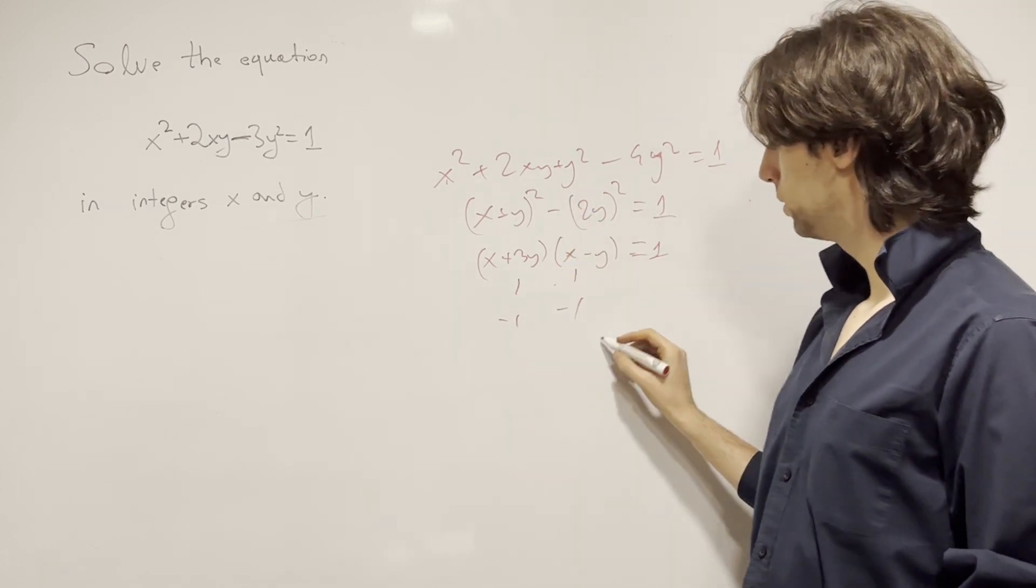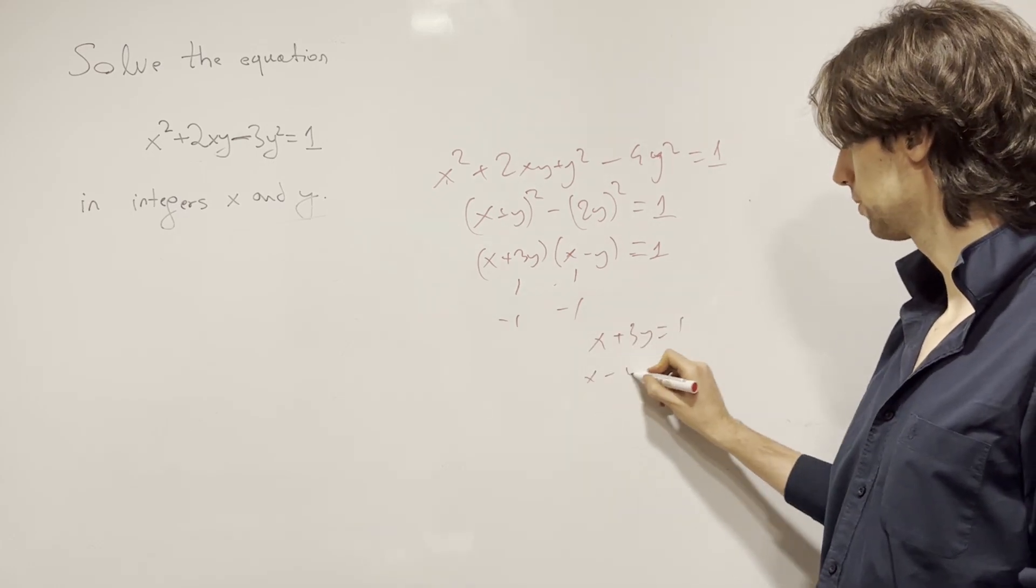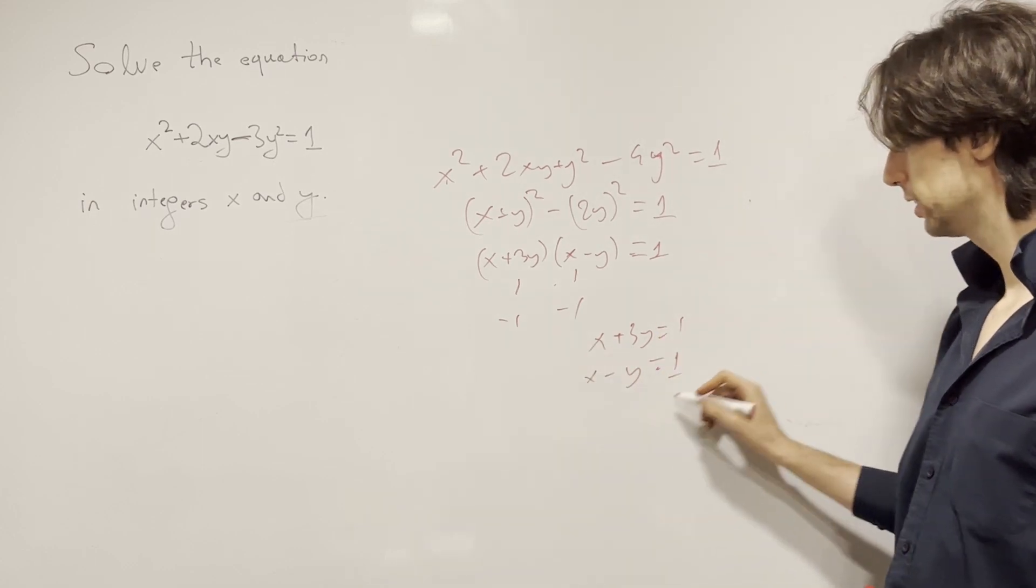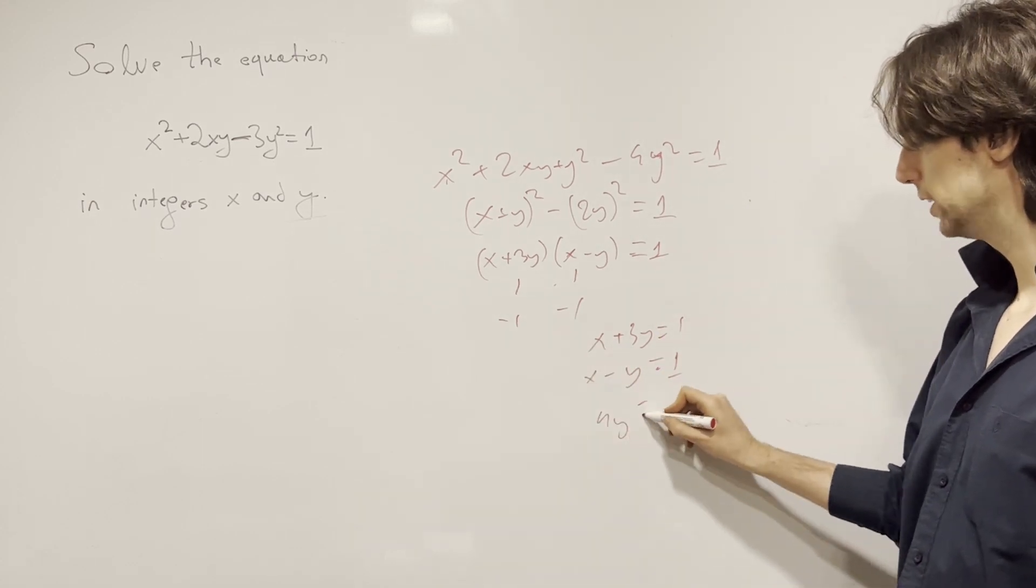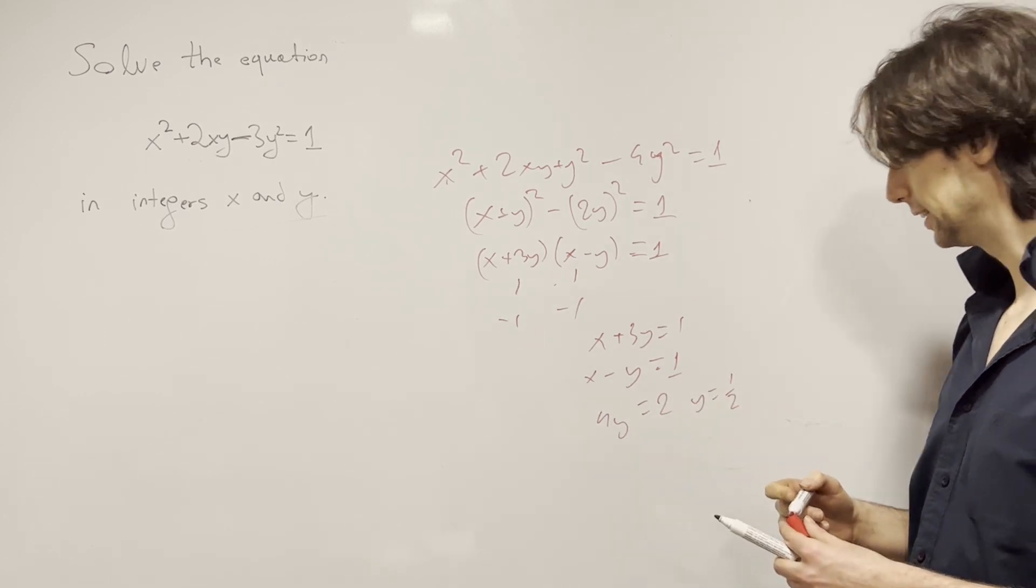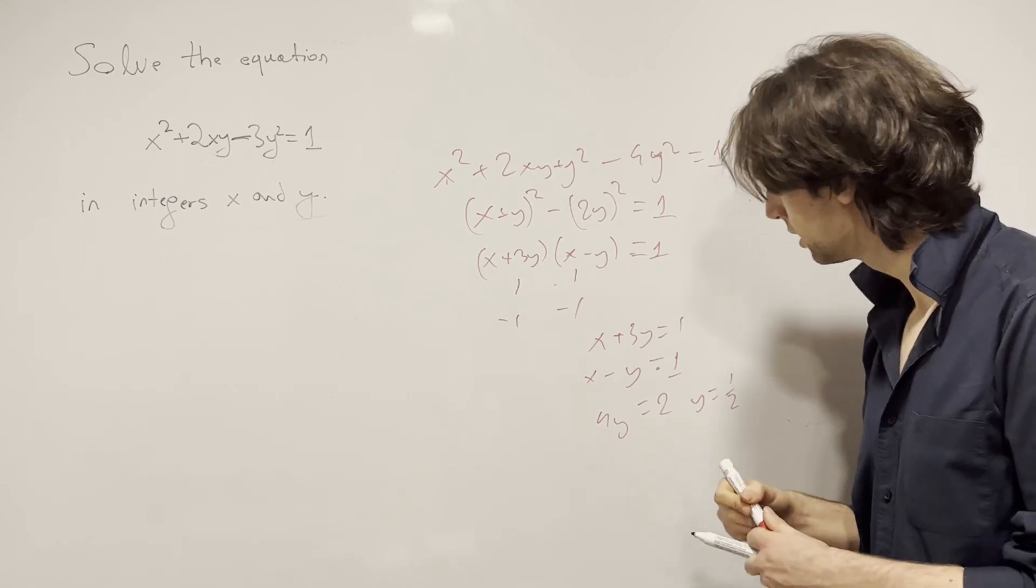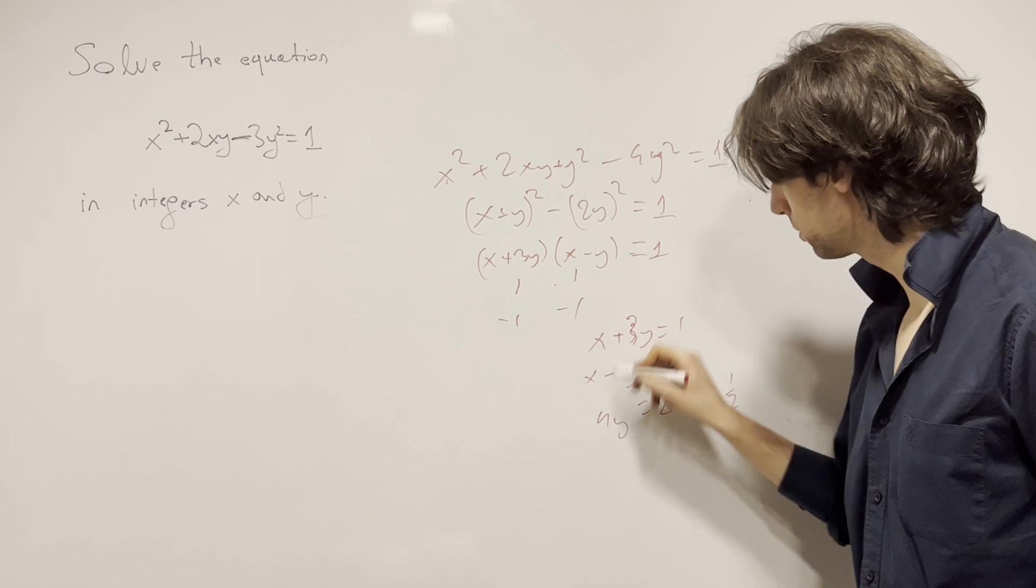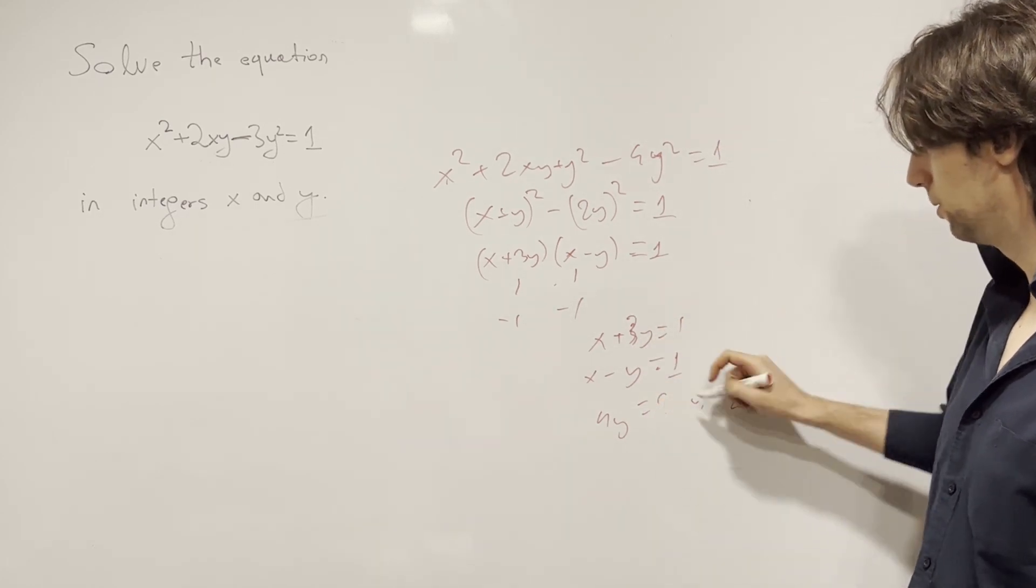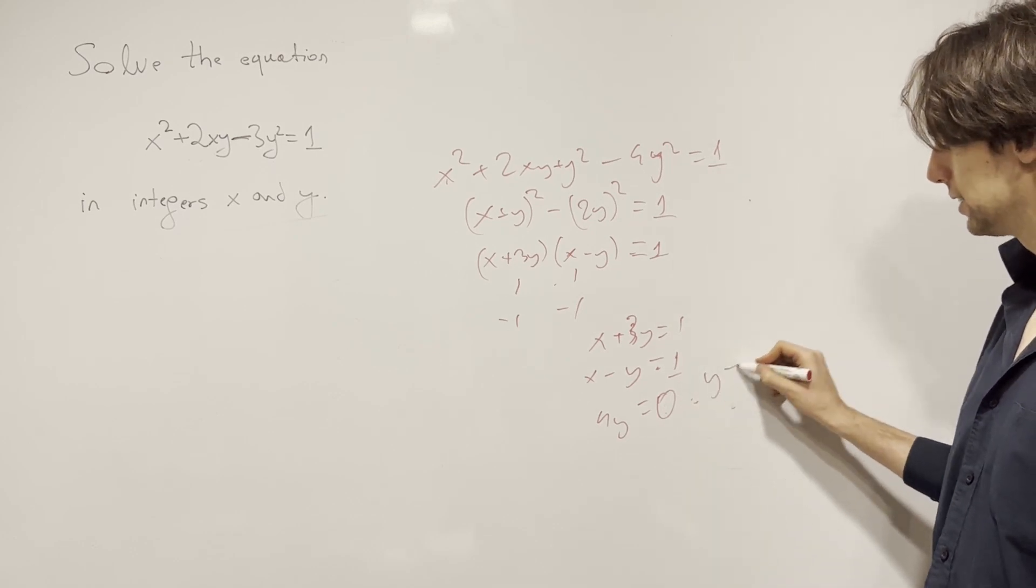And what does that mean? So if both of these are 1, then we have this equation with two unknowns. These two equations. Now what do we do? Say we subtract, and we get that 4y is equal to... Oh no, I get 4y is equal to 0, not 2. I added this side.